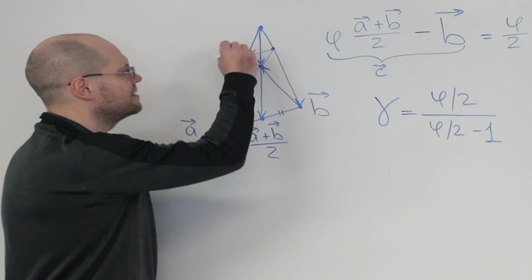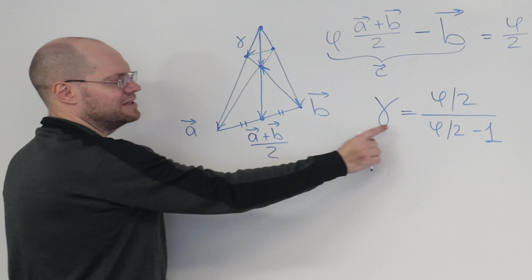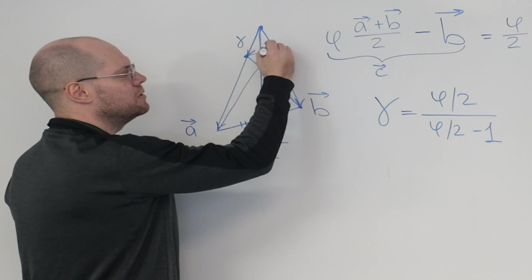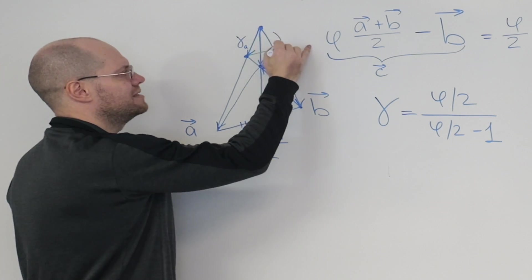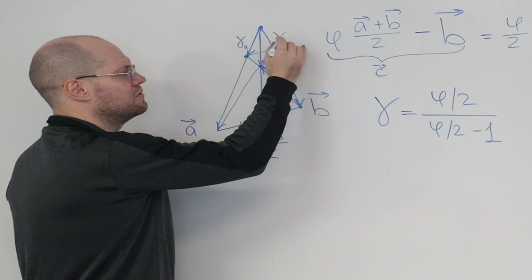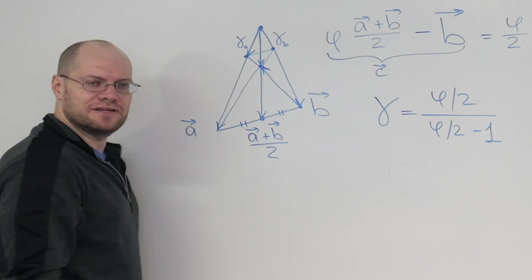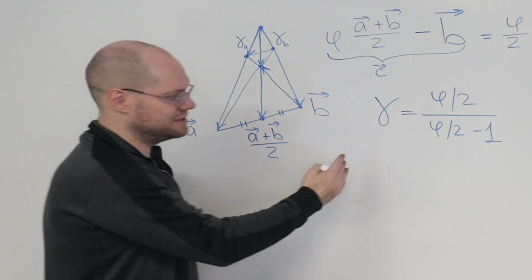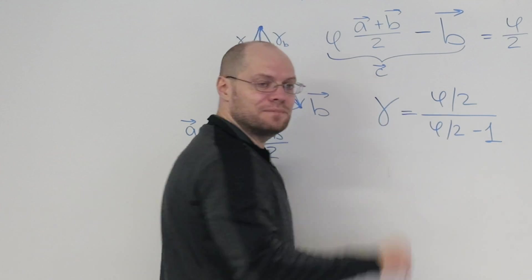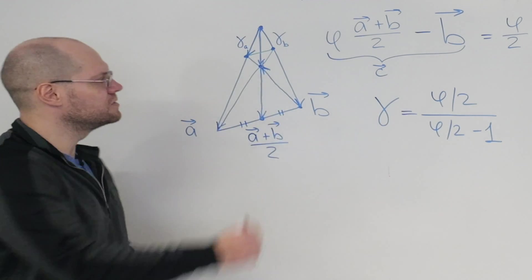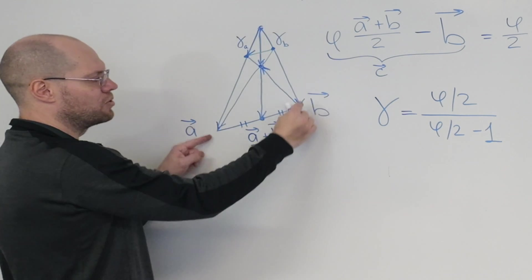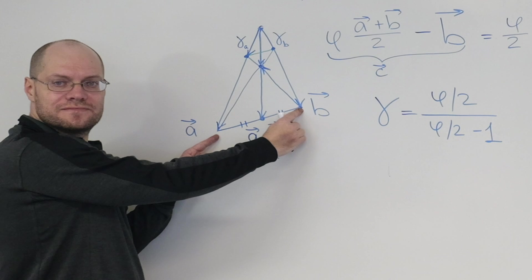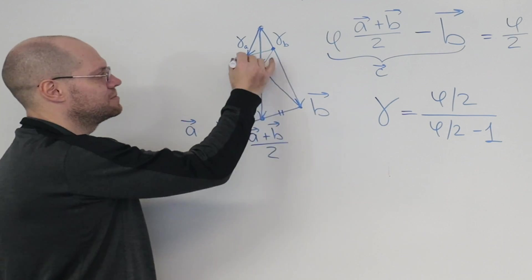Right? So the gamma that we found, the proportion, equals this. And then we would do on the other side, maybe I'll call this gamma sub A, and this is gamma sub B. We would find that the two gammas are equal. Because the exact same logic will be repeated, and it will be this same number. So these two segments are identical proportions of the overall sides. There you go. That completes the proof.